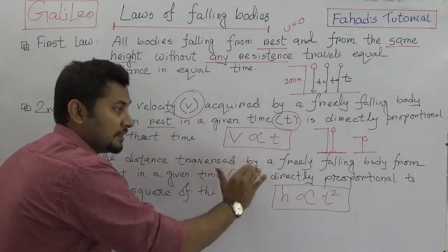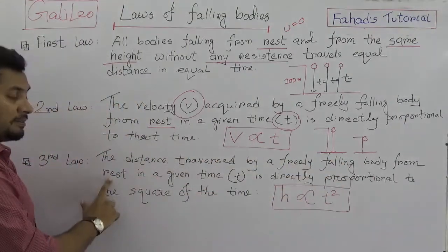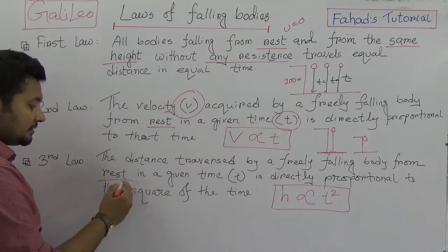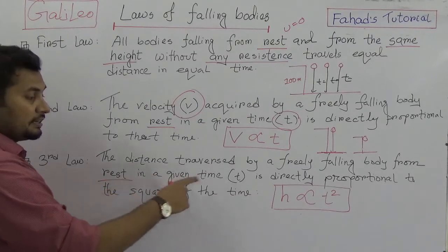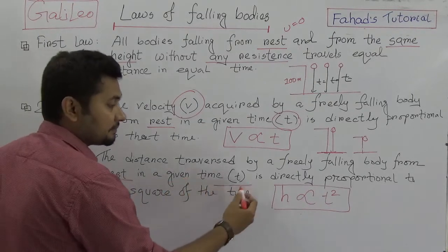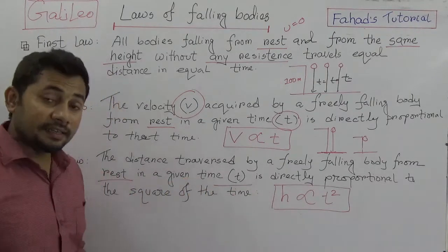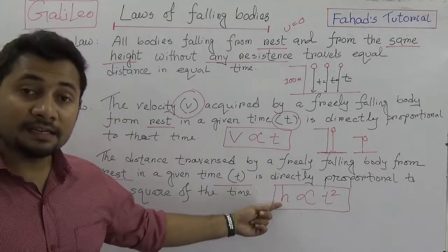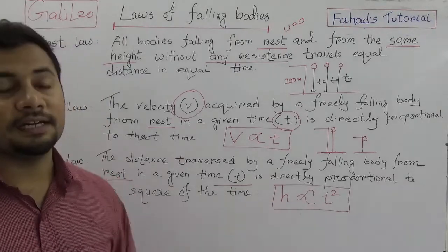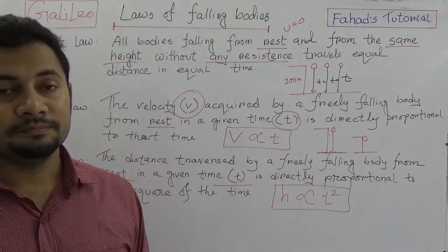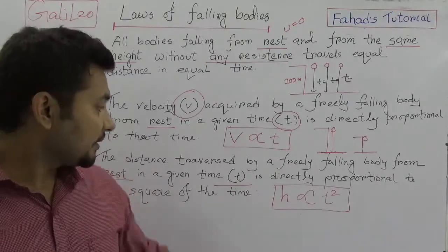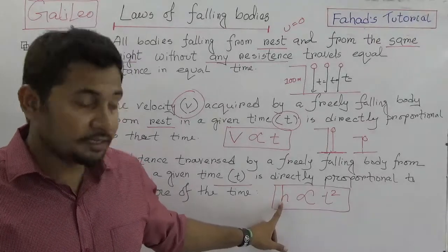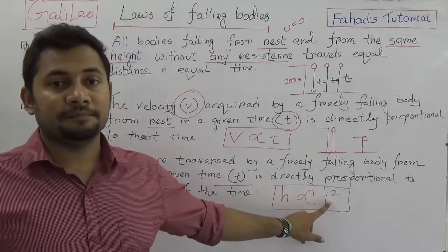The distance traversed by a freely falling body from rest, under the same conditions, gives us the third law: the height h is dependent on the square of time — so h is proportional to t².